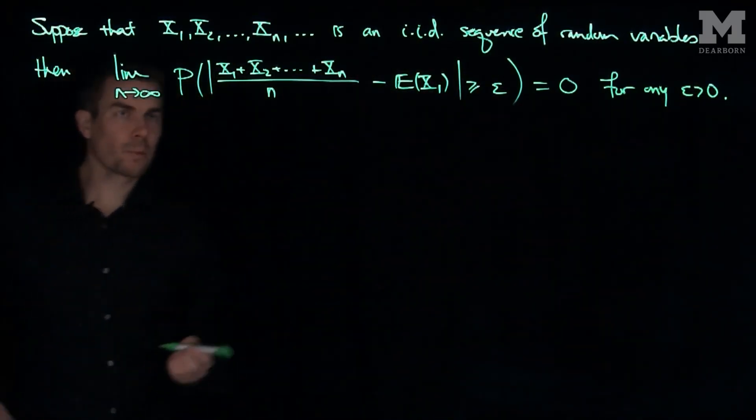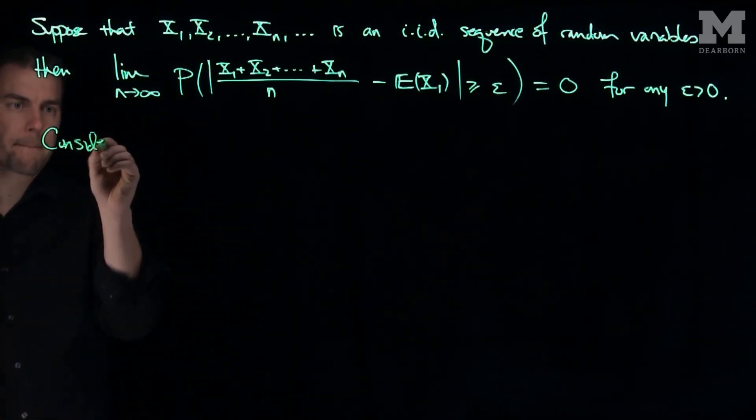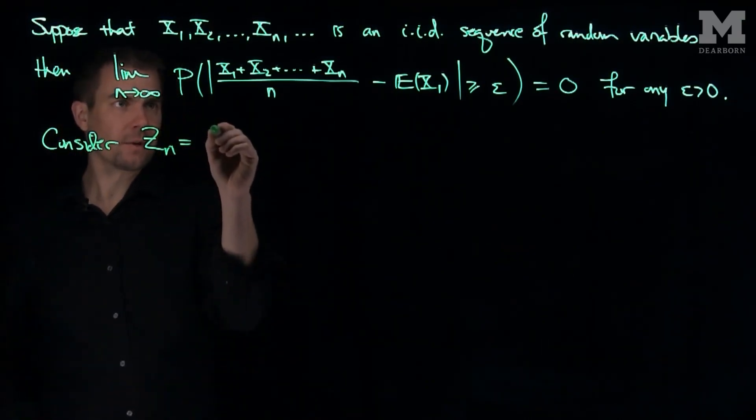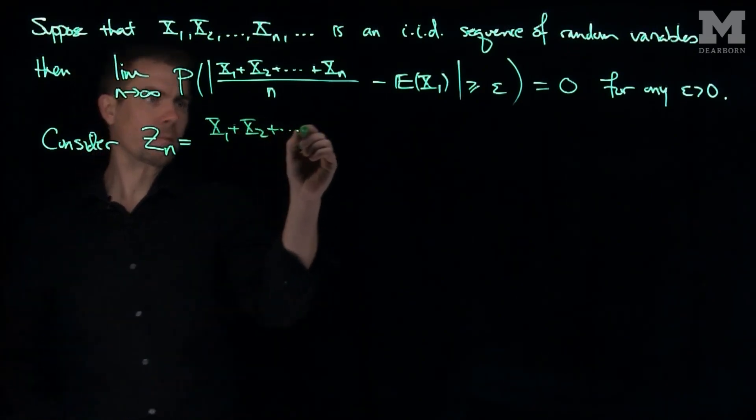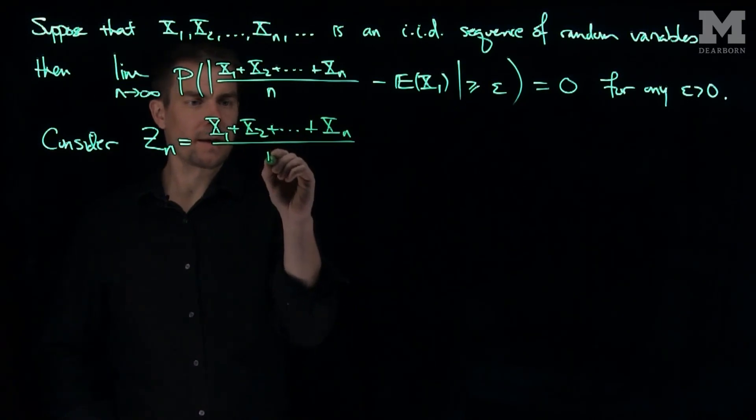And so let's get a sense of this. What we're going to do is, let's consider the random variable zn. And what is zn? So zn is going to be x1 plus x2 plus xn, all divided by n.